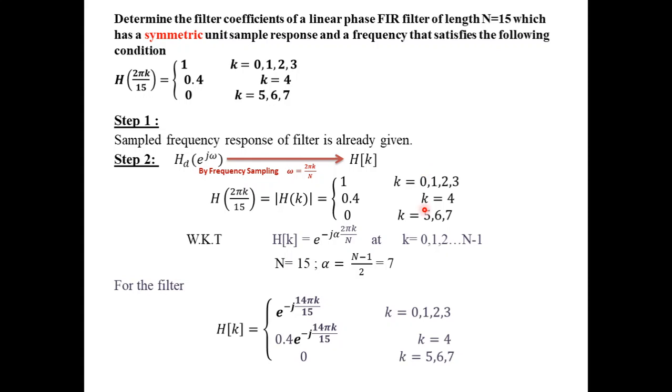Similarly, for k equal to 4 it is the magnitude 0.4 multiplied by e power minus j alpha 14πk by 15 and it is 0 for k equal to 5, 6, 7. Hence, this is the h of k which is obtained.